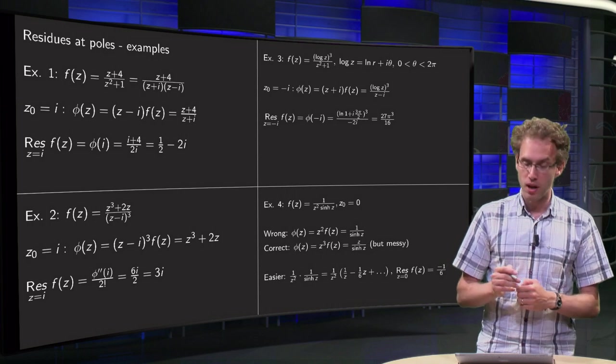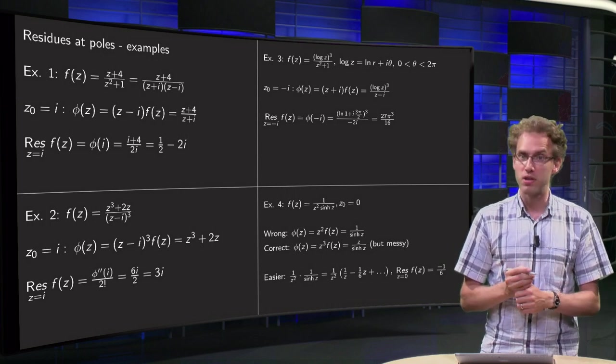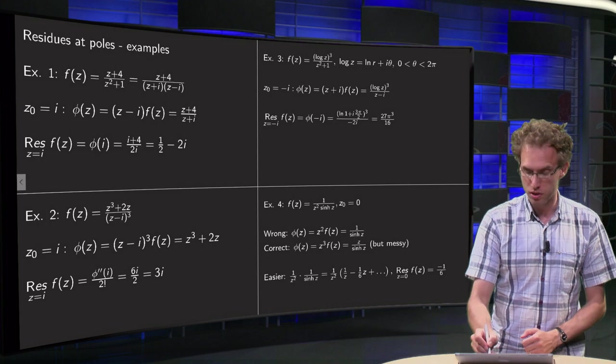For example, we have the function of 1 over z squared times sine hyperbolic of z, and z0 equals 0.